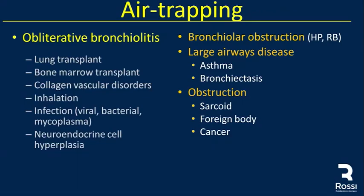Air trapping is one of the main causes of mosaic attenuation. When you perform the expiratory CT, you can find air trapping, mainly due to obliterative bronchiolitis, bronchial obstruction, or large airways disease. The main causes include lung transplant, bone marrow transplant, collagen vascular diseases, inhalation, infection, rare diseases, hypersensitivity pneumonitis, respiratory bronchiolitis, asthma, and bronchiectasis.